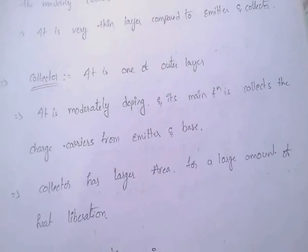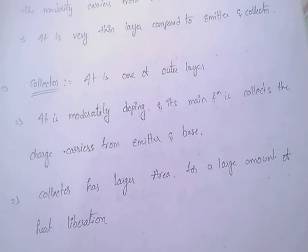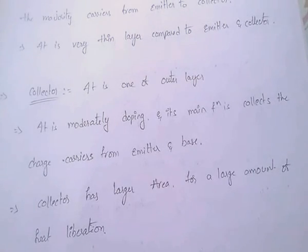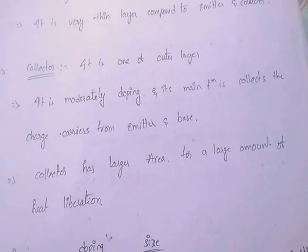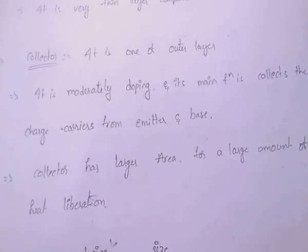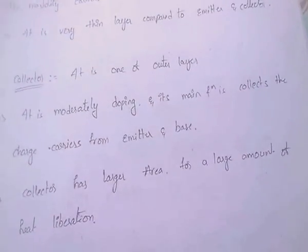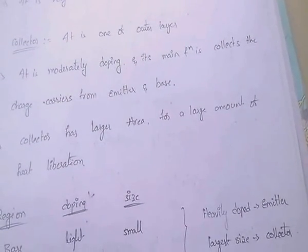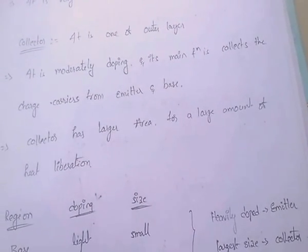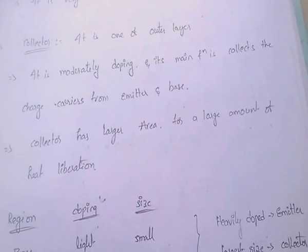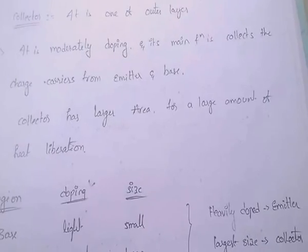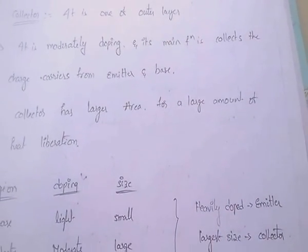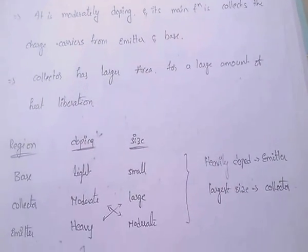Coming to the collector, it is one of the outer layers. It is moderately doped, and its main function is to collect the charge carriers from the emitter and base. The collector has a larger area than the base and emitter, for large amount of heat liberation.